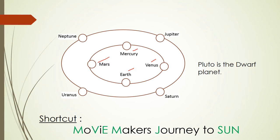The outer circle has four planets: Jupiter, Saturn, Uranus and Neptune. These four planets are called as outer planets or giant planets. These are also called as Jovian planets.